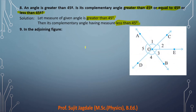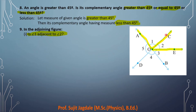Question 9: In the adjoining figure, we have to answer six questions. First: is angle one adjacent to angle two? Adjacent angle means they have a common arm, and the non-common arms are on either side of the common arm. Angle one is angle AOC and angle two is angle COE — both having common arm OC, with OA on the left and OE on the right, and common vertex O. So yes, they are adjacent angles.